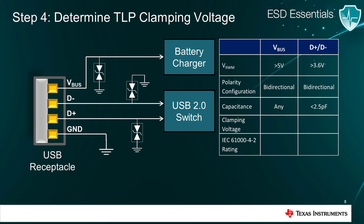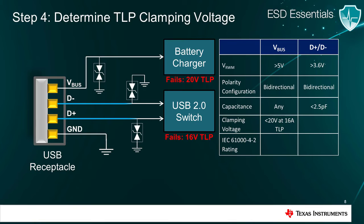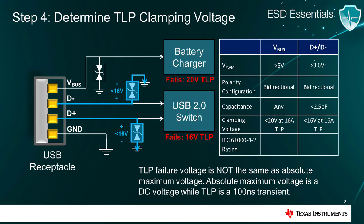Next, we take a look at the clamping voltage required to protect the system, which in this case would be the battery charger and USB switch. Let's assume the battery charger fails at a TLP pulse of 20 volts and the USB switch fails at a TLP pulse of 16 volts. This means that to protect the battery charger from an 8 kV ESD strike, the ESD diode must have a clamping voltage of less than 20 volts at 16 amps TLP. Likewise, to protect the USB switch, the ESD diodes must have a clamping voltage of less than 16 volts at 16 amps TLP. Keep in mind, the TLP failure voltage of a device is not the same as the absolute maximum voltage rating of the device — absolute maximum voltage is a DC voltage, while TLP is a 100 nanosecond transient. To save time, TI has created several selection tools and guides to recommend solutions based on the interface.